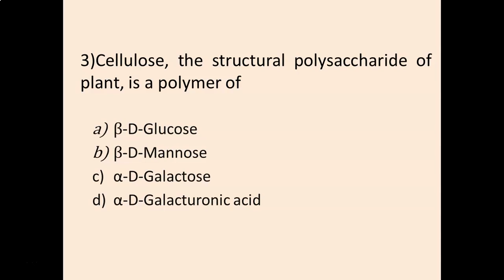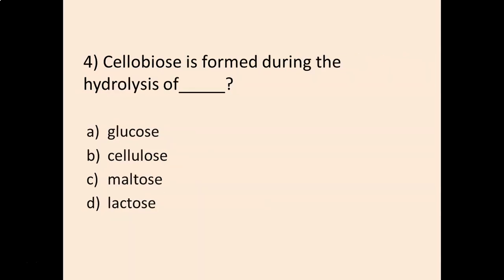Question number three: cellulose, the structural polysaccharide of plants, is a polymer of — options are beta-D glucose, beta-D mannose, alpha-D galactose, or alpha-D galacturonic acid. The answer is beta-D glucose.